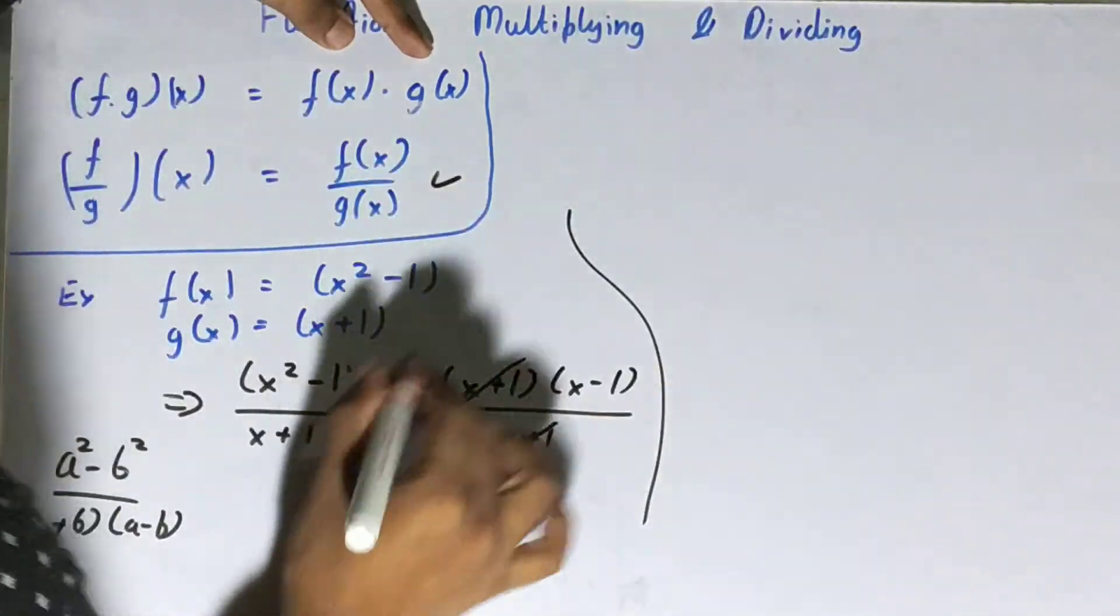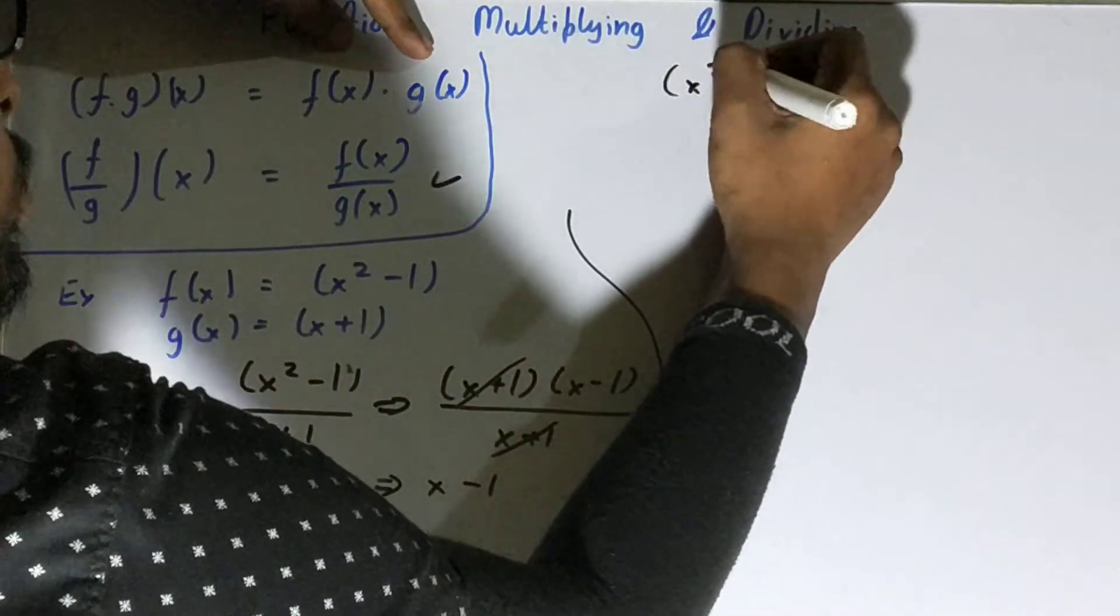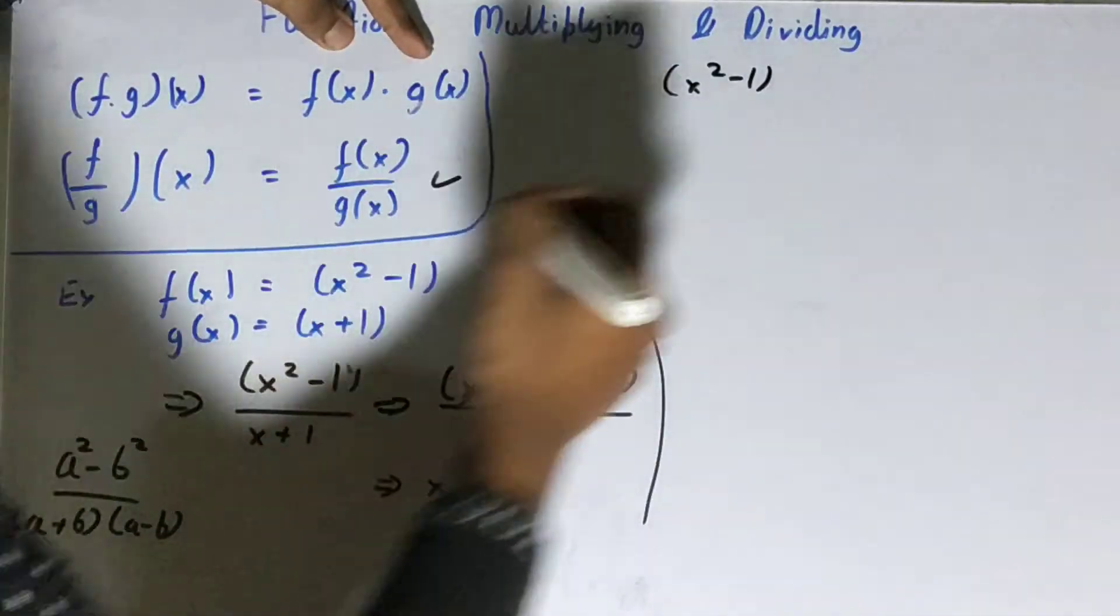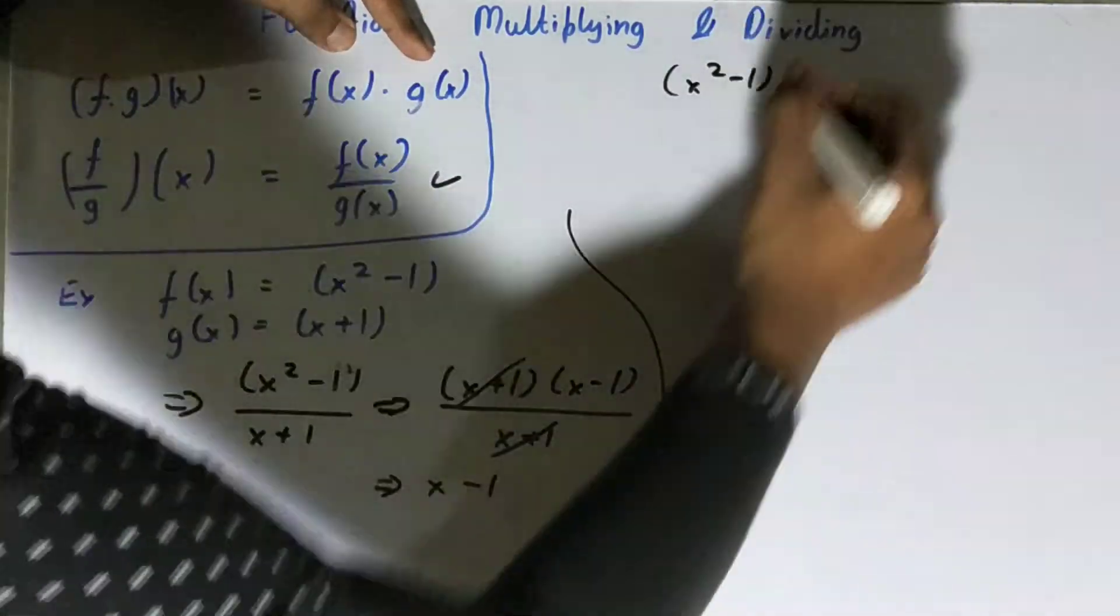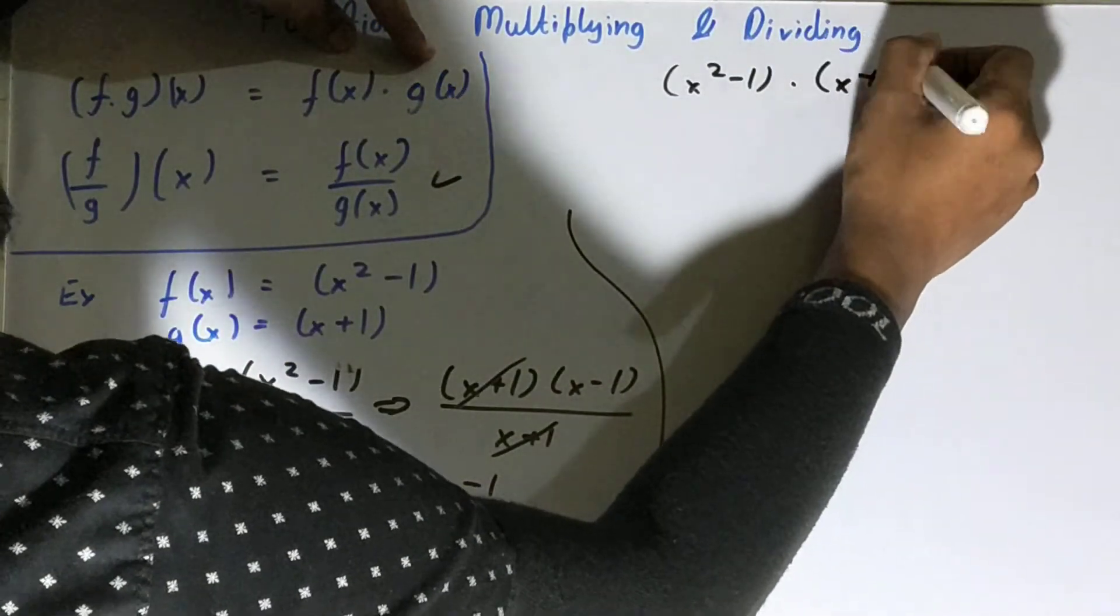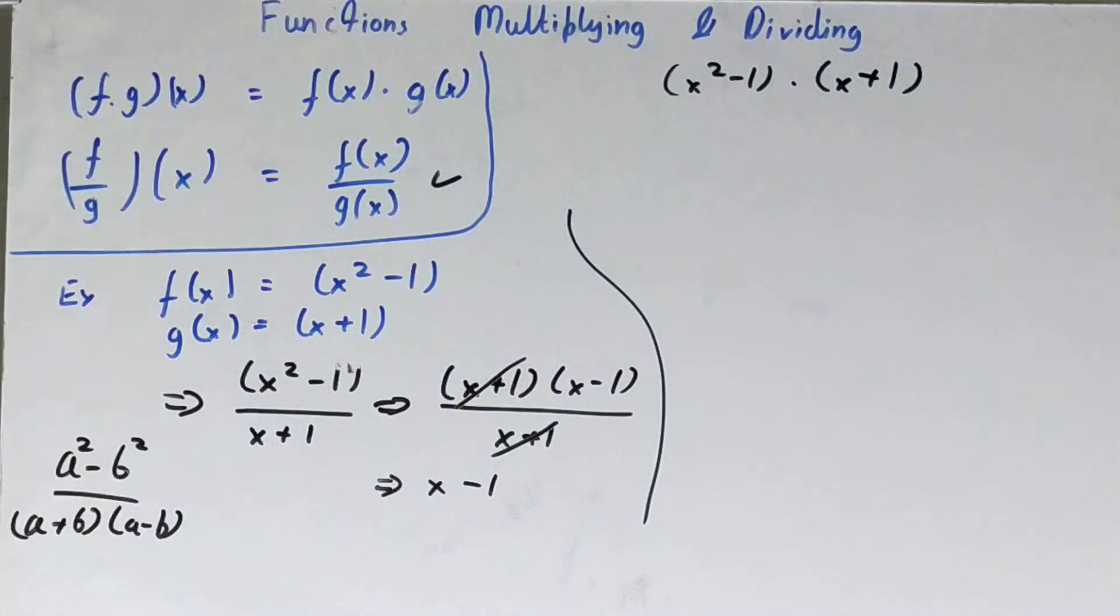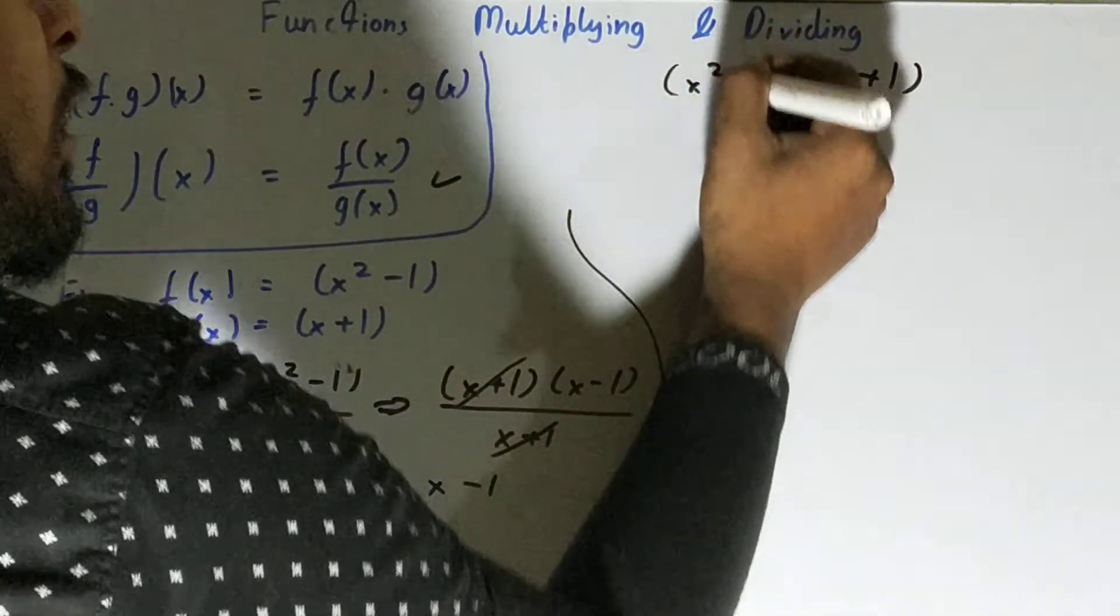So let's write these two functions in a multiplication way. First we'll write f of x, that is x squared minus one, and then we'll write g of x, that is x plus one. Right? So how we multiply? We multiply like your normal binomial, that is, the first term will be multiplied with both the terms one by one.